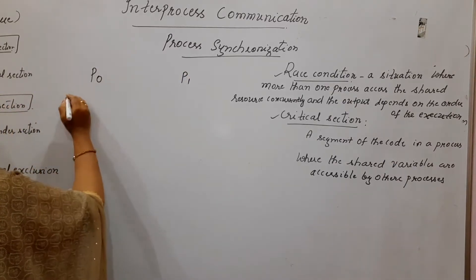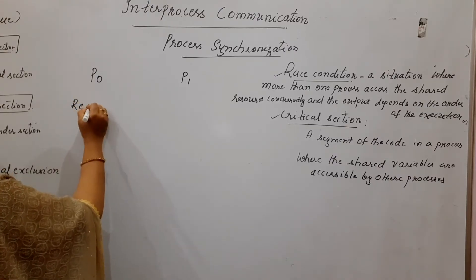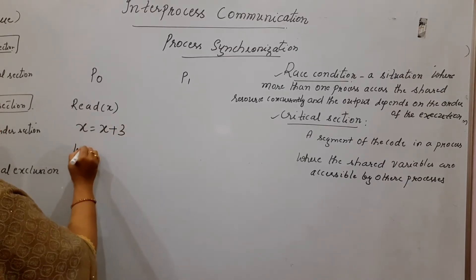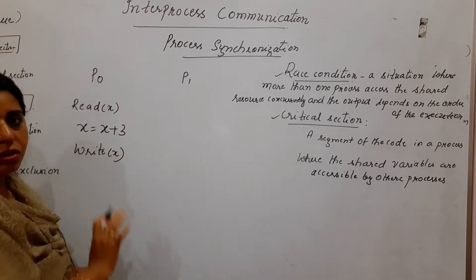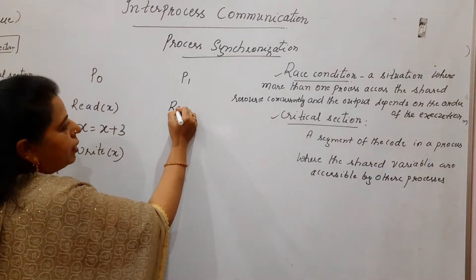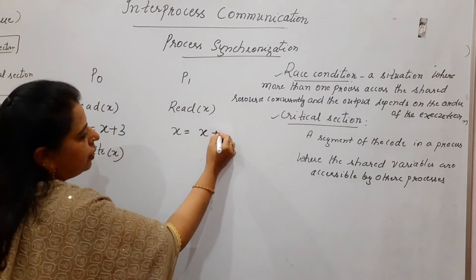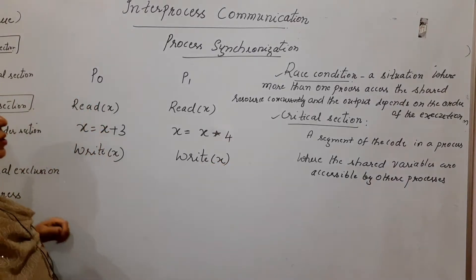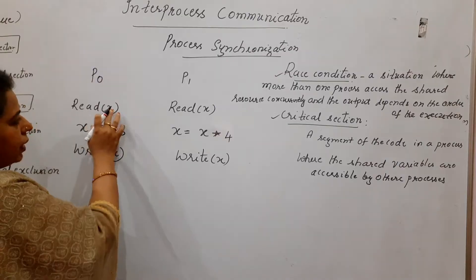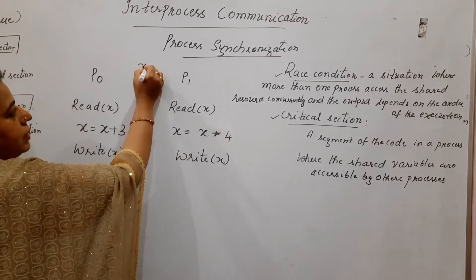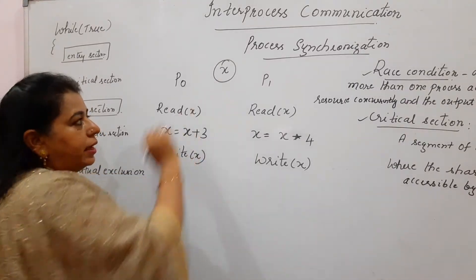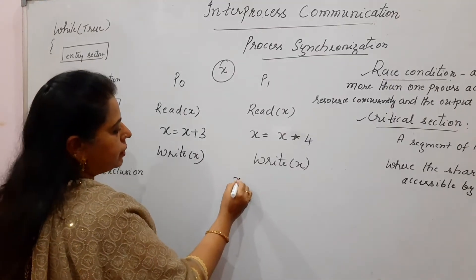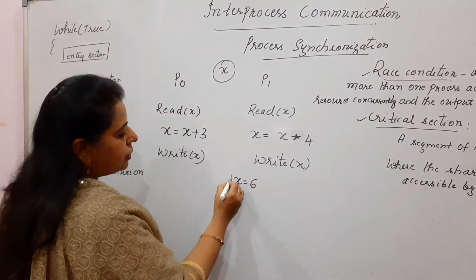These two processes have got their code written. P0 is reading some variable, updating the value by performing some operation with that variable, and finally writing that value. P1 is also carrying out a similar job — it is reading a variable and writing the value for x. When these processes try to execute, notice that they have a common variable x. Whatever the initial value assigned for x, the processes will continue their execution based on that. Let us take x equal to 6 as the initial value.